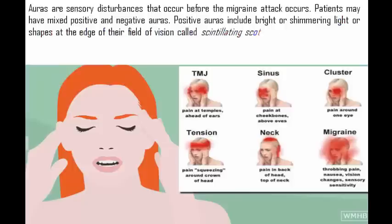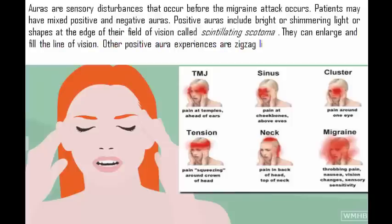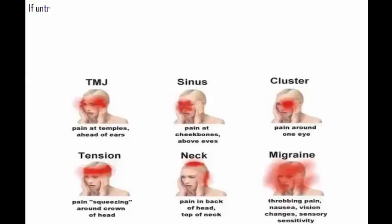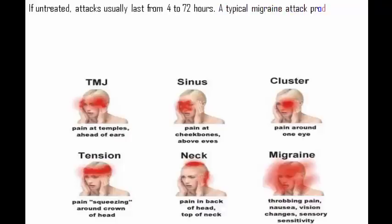Other positive aura experiences are zigzag lines or stars. Negative auras are dark holes, blind spots, or tunnel vision — an inability to see to the side. If untreated, attacks usually last from 4 to 72 hours. A typical migraine attack produces throbbing pain on one side of the head, but it can be bilateral.